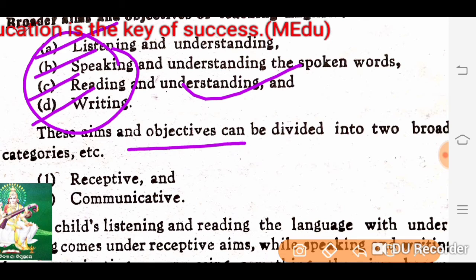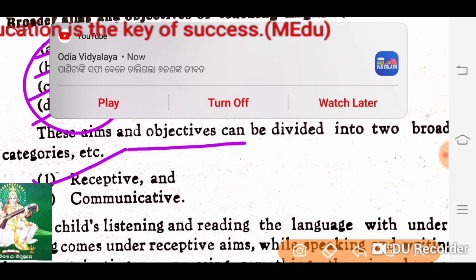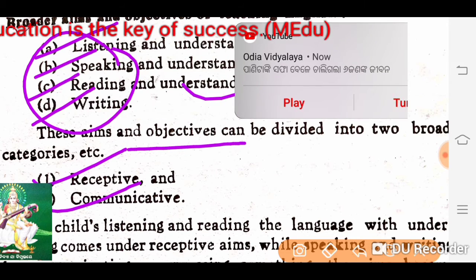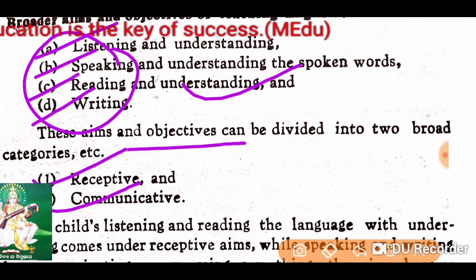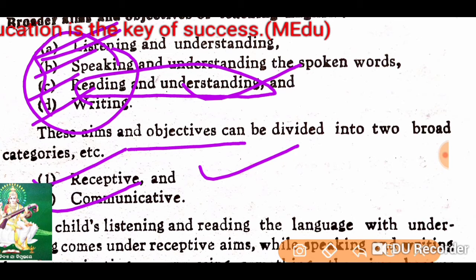These aims and objectives can be divided into two broad categories. One is receptive and the other is communicative. We gain knowledge through listening and understanding, and reading and understanding — these are called receptive skills. Speaking, understanding, and writing are called communicative skills.